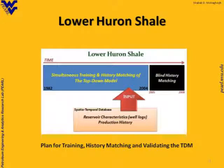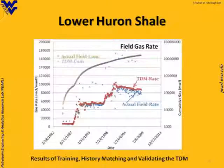We used data from 1982 to 2004 to build, train, and history match the model. We used the data from 2005 to 2008 as a blind history match to make sure our model is correct. This is the result we got: you have rate versus time in dots and QM versus time. The red is TDM — top-down model — and the blue is actual.